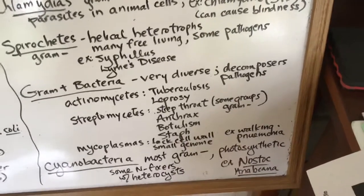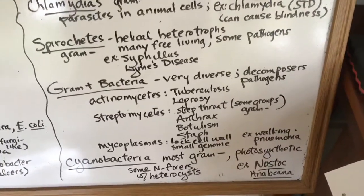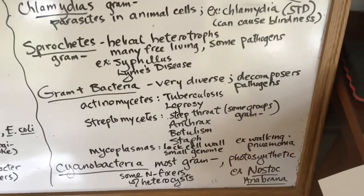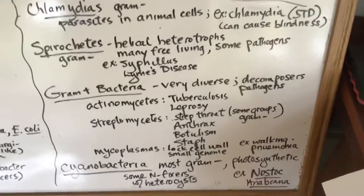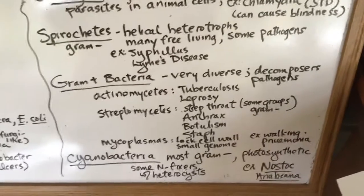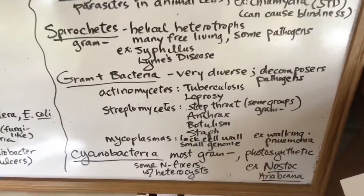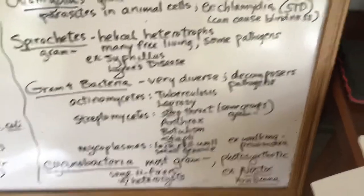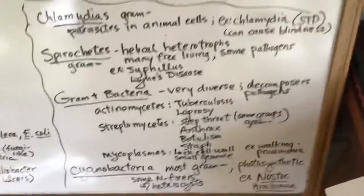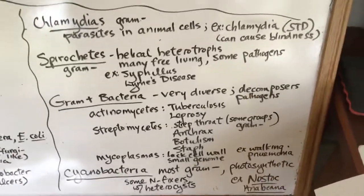There's some that are called Mycoplasms - these are really small and they have a very small genome, so they're kind of weird. Walking pneumonia is an example of that. Cyanobacteria, which are gram negative, are the main photosynthetic ones and we already talked about Anabaena, which is that nitrogen fixer one. You might also remember Nostoc from the lab in Core 1 - it looked like a little beaded necklace.